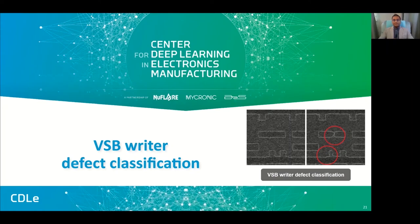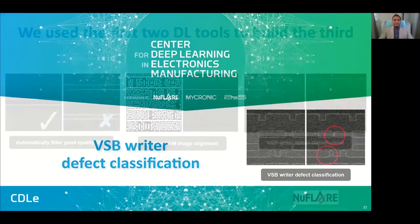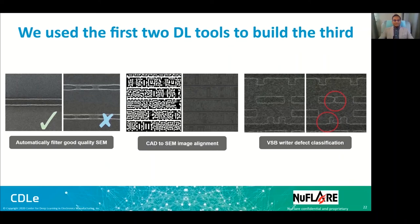The VSP mask writer is a very reliable machine which runs 24/7. Occasionally there may be some malfunctioning, and for the mask shop it is important to identify, debug, fix, and return the machine to operation. Human experts use SEM images to identify problems with the mask. We created a deep learning based tool to help experts identify defects. I would also like to mention that we used the first two deep learning tools — the filter and the image alignment — to build this third one. It is a kind of deep learning tool stack built one on top of the other.